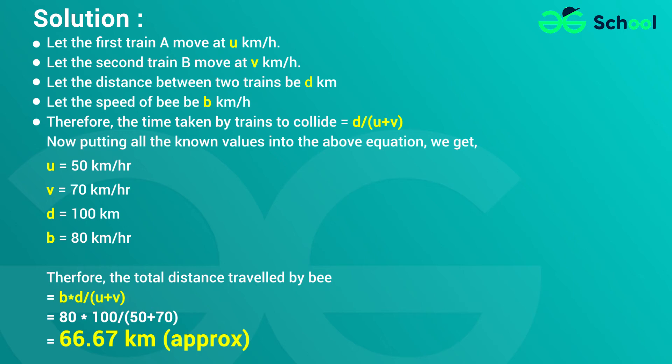Let the speed of B be W km per hour. Therefore, the time taken by the trains to collide is equal to D divided by (U plus V).